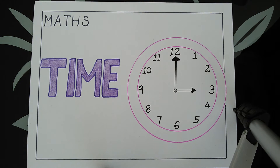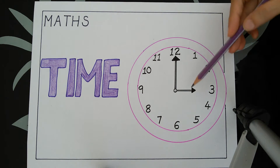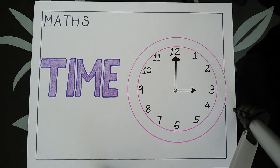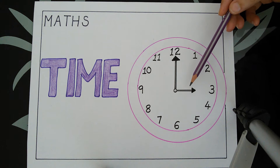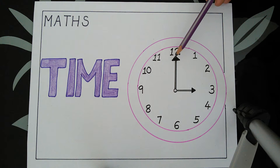Welcome students. In my last video we had learnt about the small hand and the big hand in reading time. Today we will learn more about reading time. We know that the small hand shows the hour and the big hand shows the minutes.